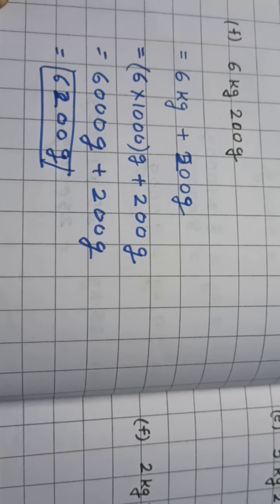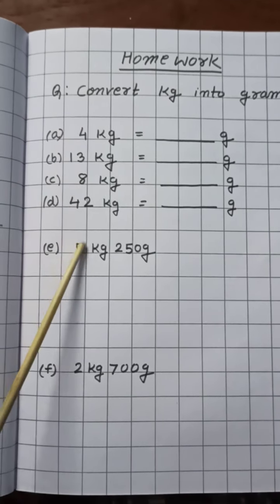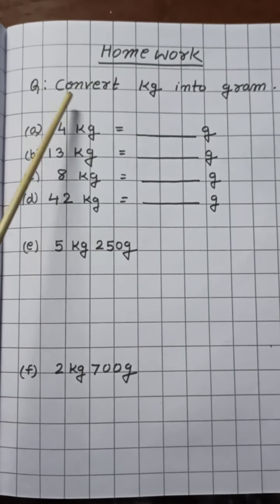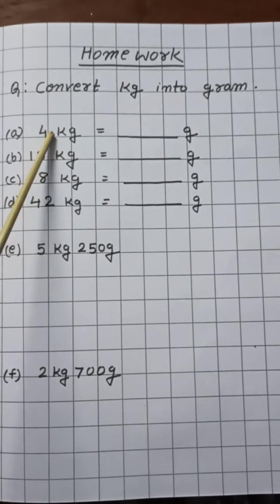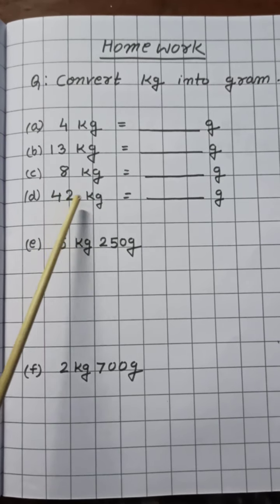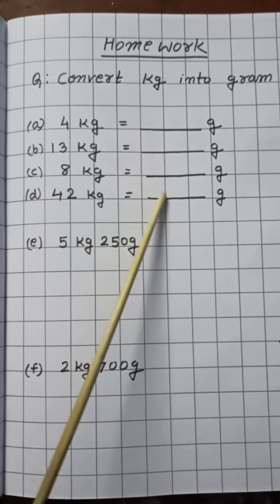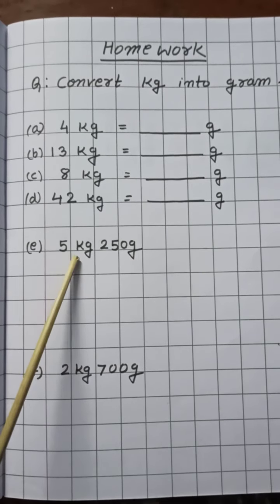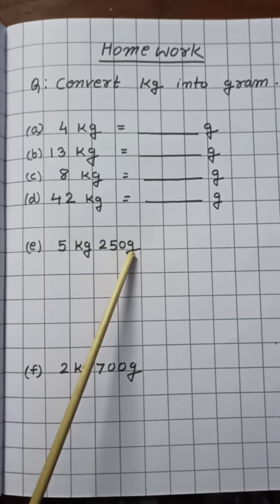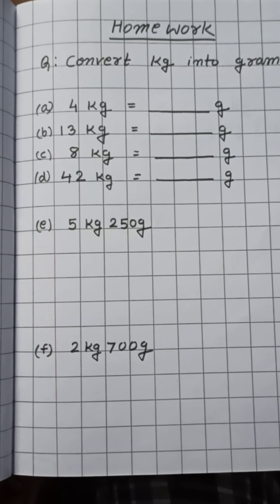So this way you can write the answer, children. Now it is your turn. You have to do the answers. First question: convert kilogram into gram — here I have written 4 kilogram, 13 kilogram, 8 kg, and 42 kg. You can write the answers directly. Two more questions: 5 kilogram 250 gram — you have to write the answer with the process and show me. Thank you.